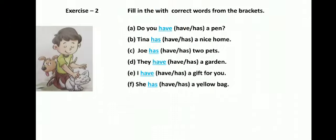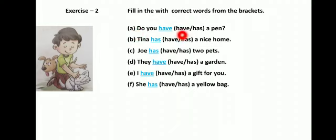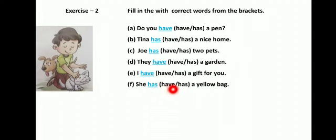Now let's proceed to exercise 2. Fill in the blanks with the correct word from the bracket — have and has. यहाँ पर options दिये गए हैं। Blank के related देखना है और correct answer brackets से find करके लिखना रहेगा। Sentences: do you dash a pen? Tina dash a nice home. Joe dash two pets. They dash a garden. I dash a gift for you. She dash a yellow bag.